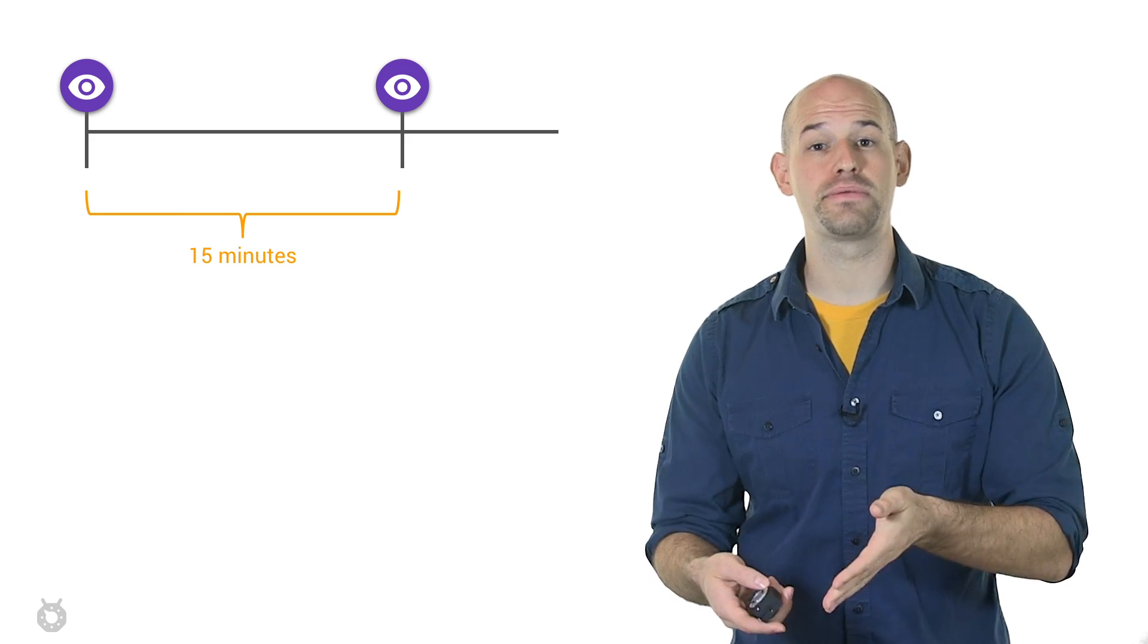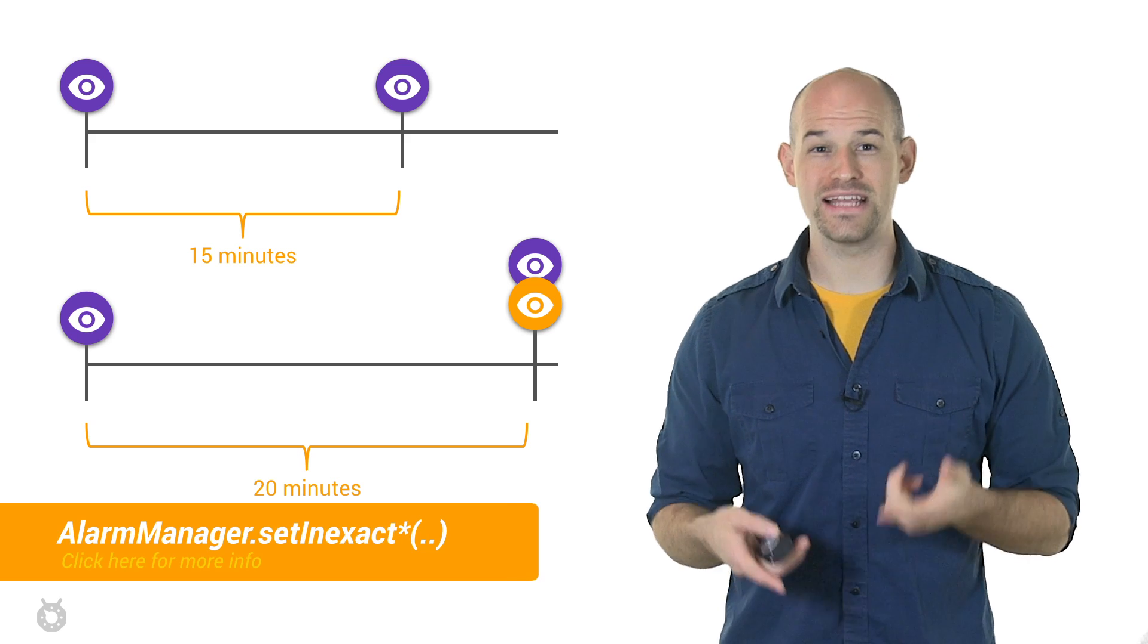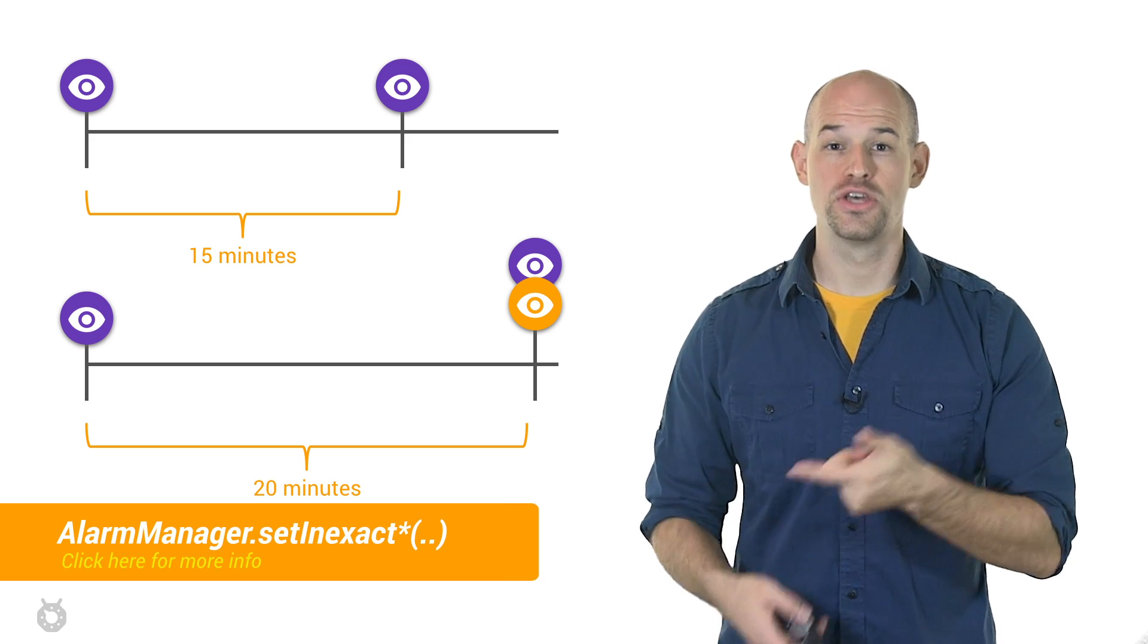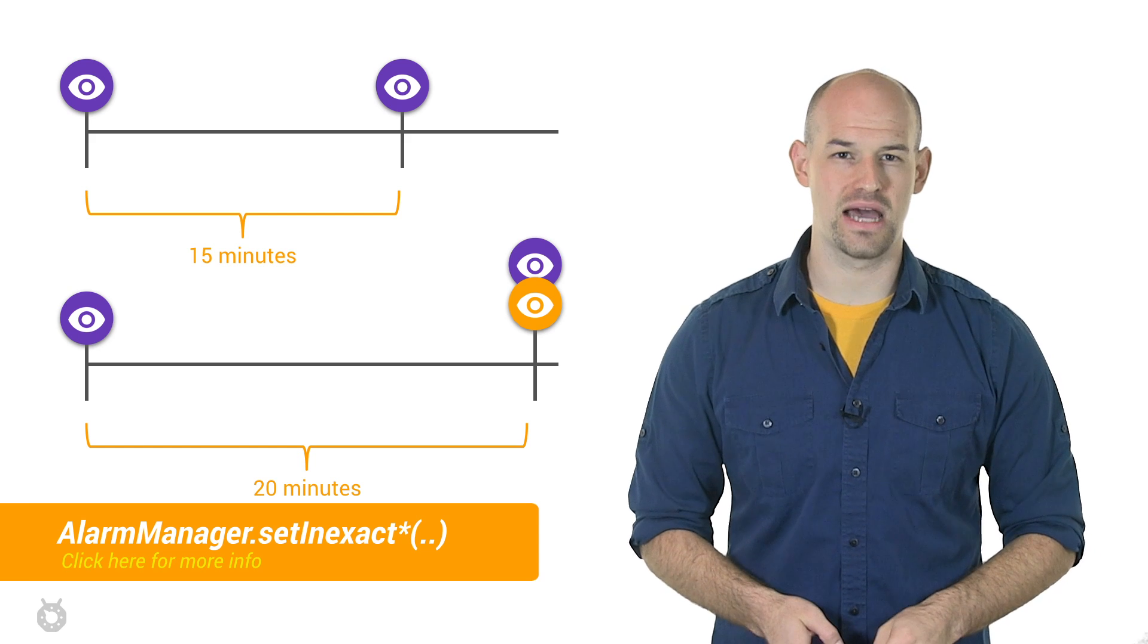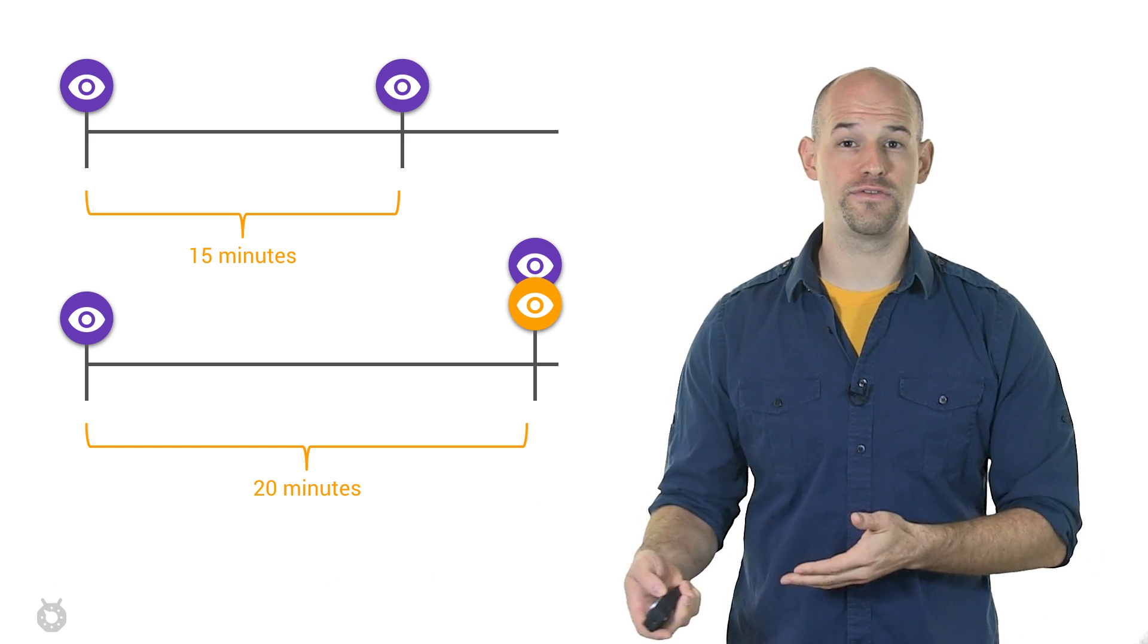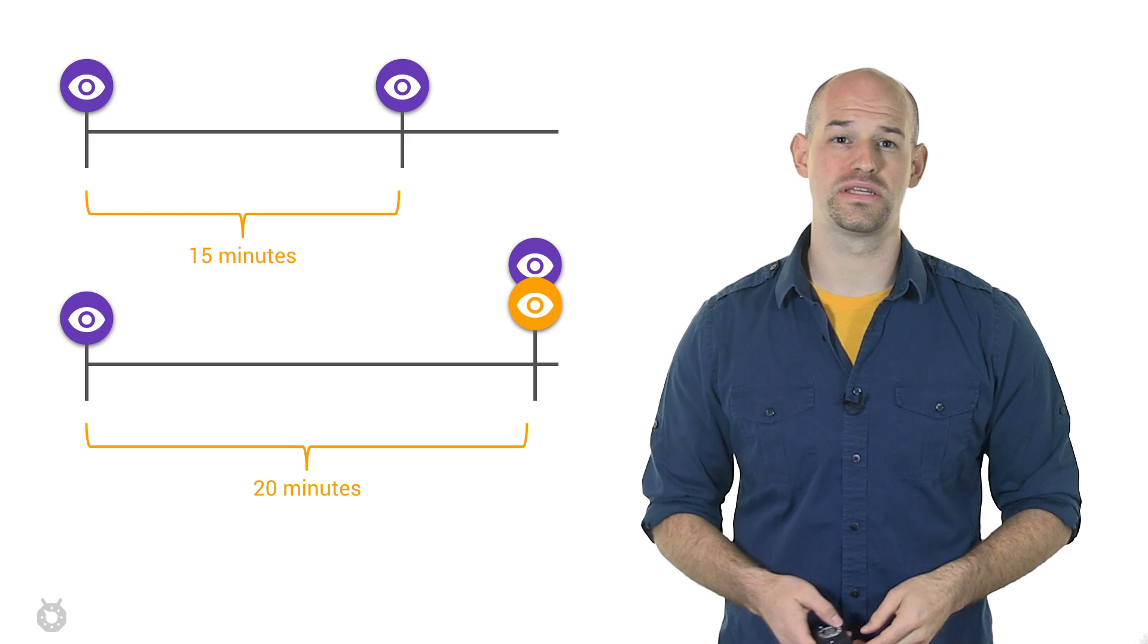For example, if there's another application that needs to wake up five minutes after yours is requested to, it's optimal to wait for that one to happen so that you can bundle the work together. This is at the core of what inexact timers do. You can schedule some work for the future, but if the system detects that there's a better time, it can delay your work in order to save battery.